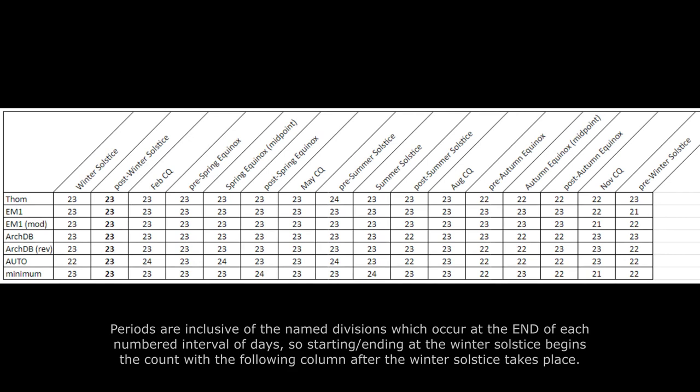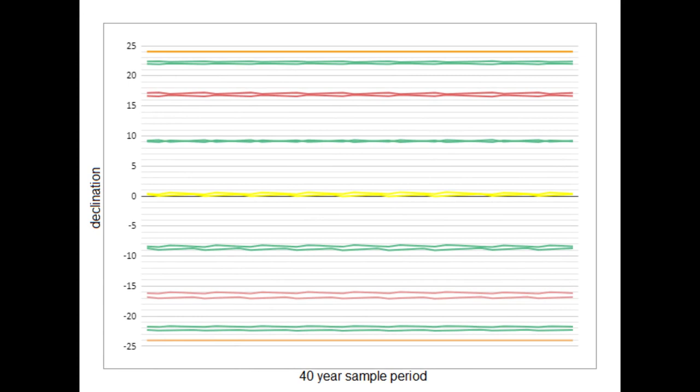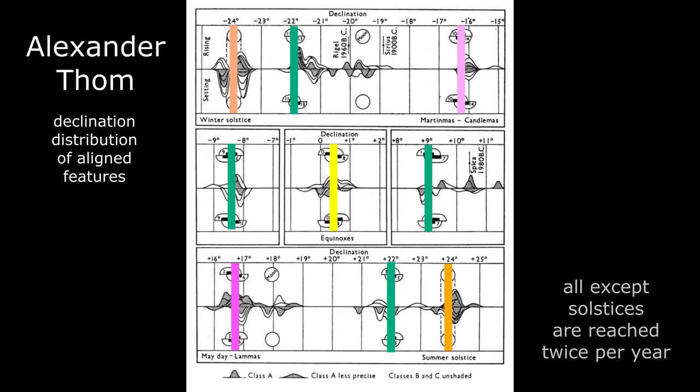I did an analysis of multiple years from various time periods spanning the Neolithic and Bronze Age to see what combinations of 23 and 22-day intervals, and sometimes 24 and more rarely 21-day intervals, produced the best match for pairs of declination values in the longer and shorter parts of the year.